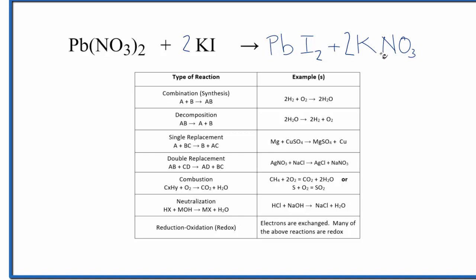One last thing we need to do is write the states for each substance. So nitrates are very soluble, so that's going to be aqueous, dissolved in water. Then potassium and iodine, both very soluble as well.